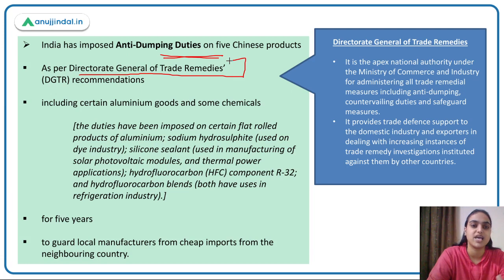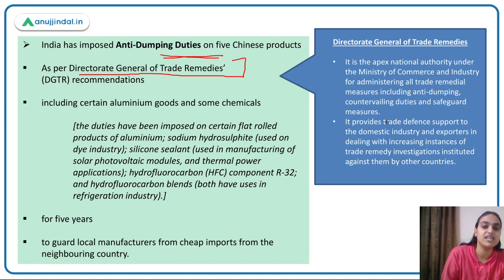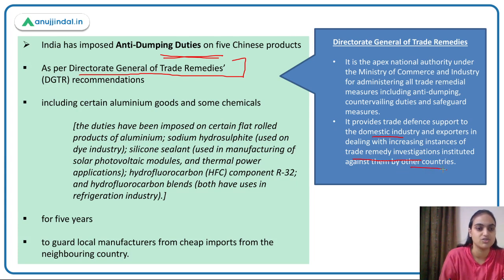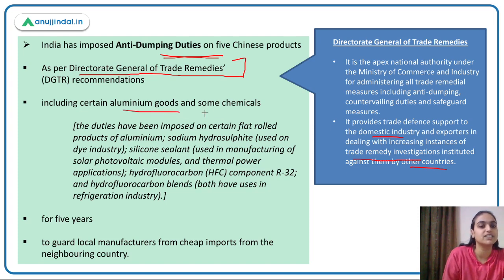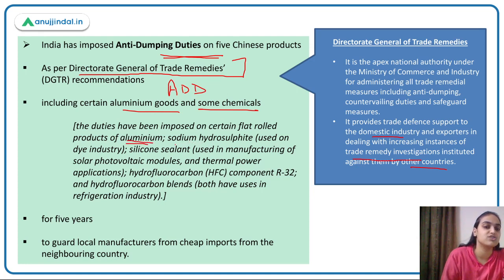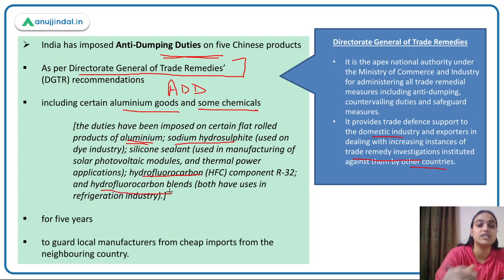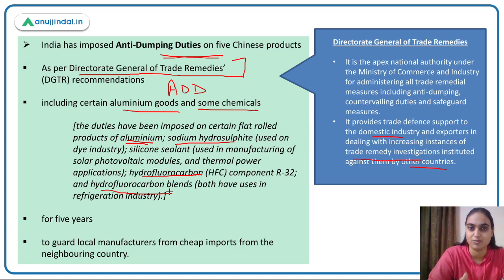The DGTR administers all trade remedial measures including countervailing duties, anti-dumping duties, and safeguard measures. It also provides trade defense support to domestic producers and exporters facing trade-related investigations in other countries. The specific products recently subjected to anti-dumping duty include flat-rolled aluminium products, sodium hydrosulfite used in the dye industry, silicon sealant used in manufacturing solar photovoltaic modules, and hydrofluorocarbon blends used in refrigeration.